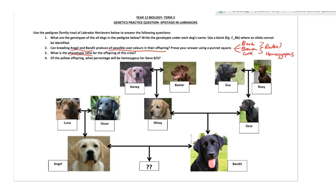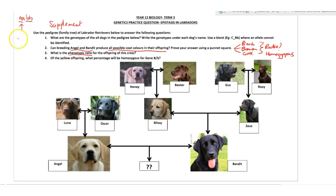How do we attack this problem of epistasis and Labradors? These dogs have a supplementary interaction, which means they need one gene to allow another gene to work. The AA gene from my videos controls whether or not the BB gene can actually show. In Labradors, we call the AA gene the E gene, and the BB gene — the color gene — we call the B gene.